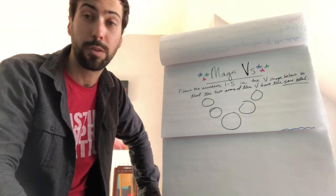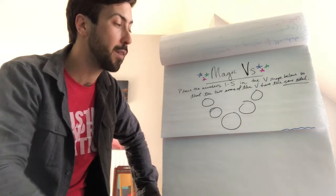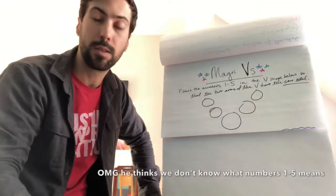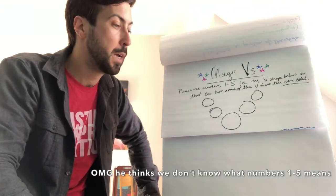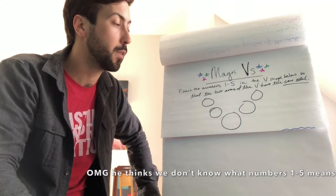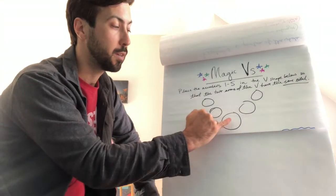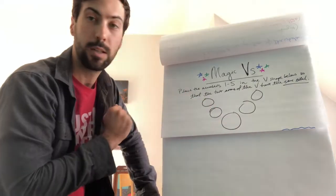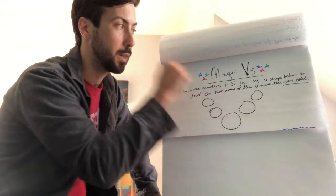So again, you're using numbers 1 through 5. That's 1, 2, 3, 4, and 5. And you're putting one of each of those in these five circles right here. And you want to make sure that starting from here and adding this plus this plus this equals the same thing as adding this plus this plus this.